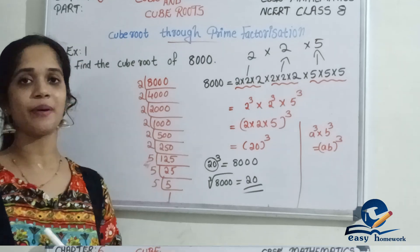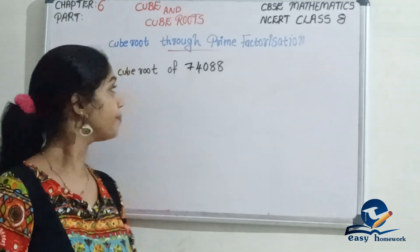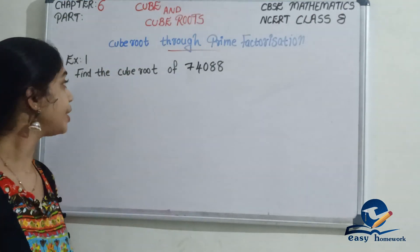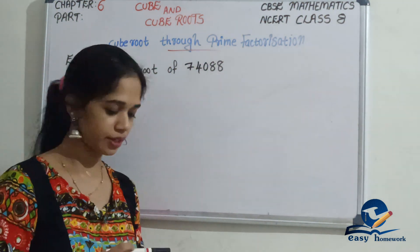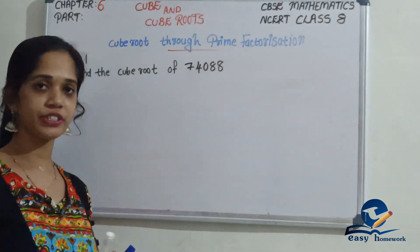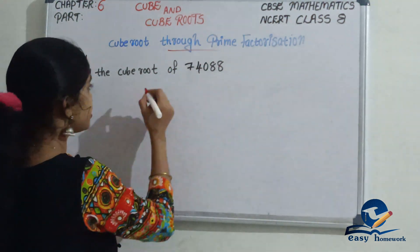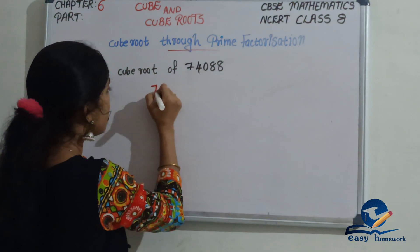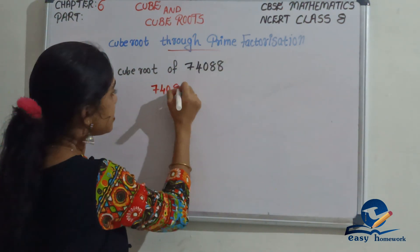The next example: find the cube root of 74,088.